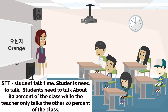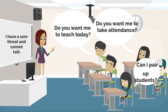Then there is STT — Student Talk Time. Students need to talk about 80% of the class, while the teacher only talks the other 20%. If you want to be clever with students who are intermediate and know the class routine, just write on the board 'I have a sore throat and cannot talk.' Students will volunteer to call attendance, ask questions about your directions to clarify what you want — you don't have to say a word. They will do everything.